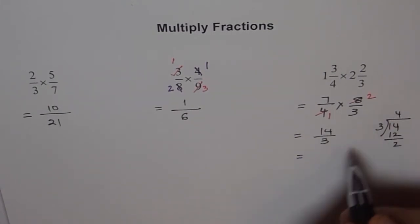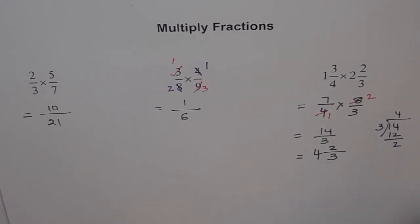So this could be written as 4 as a whole number, and 2 as a remainder, and 3 here. So that is it. You can check if it is right or wrong. 4 times 3 is 12. 12 plus 2 is 14. So you get 14 in the numerator. And denominator remains as such.